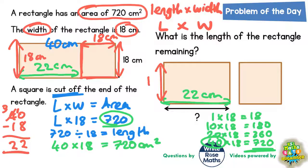So what we're dealing with here is an 18 by 22 centimetre rectangle. And that is the answer to the question. It says what is the length of the rectangle remaining? So the length is 22. That's our final answer, 22.